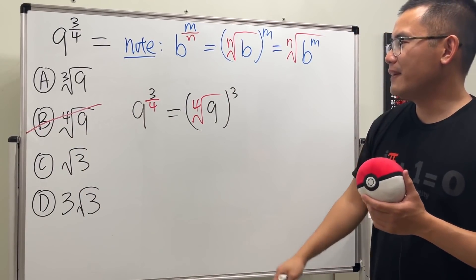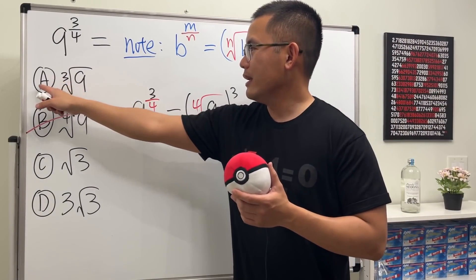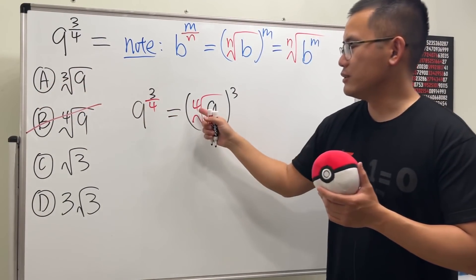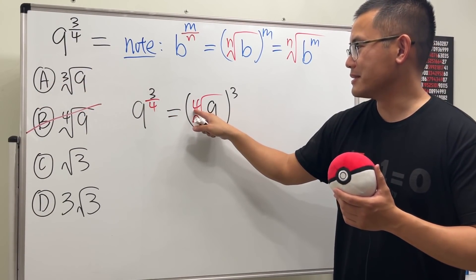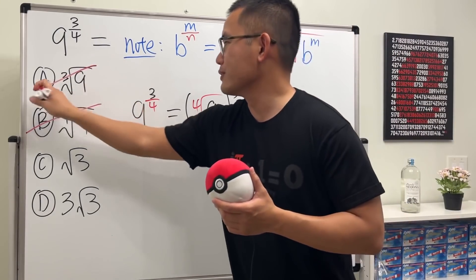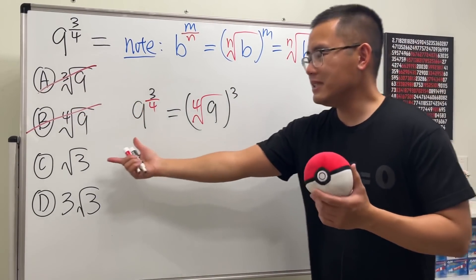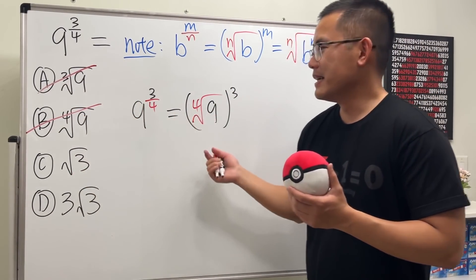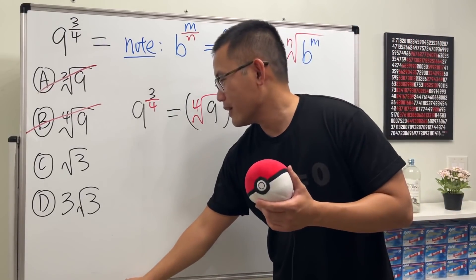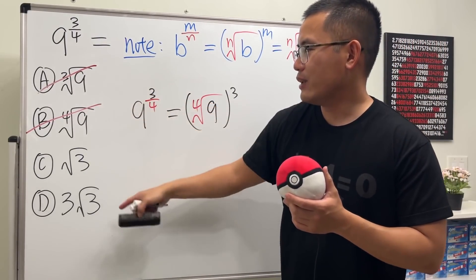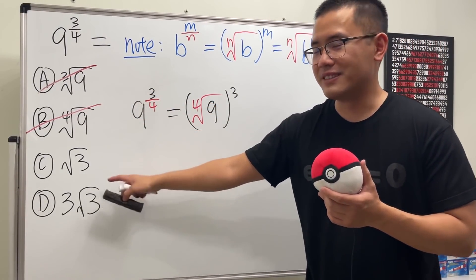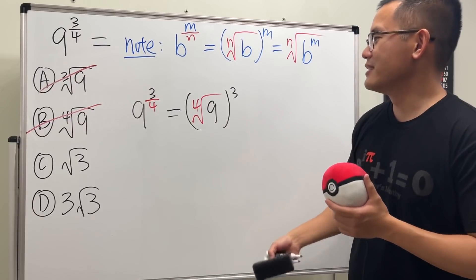So you can just get rid of B right away. And in fact, you can also get rid of the choice A because they just put the three right here instead of the four, which is very wrong. So get rid of that. And of course C is also very wrong because it's just not possible. But once you get rid of this and that, at least you have a 50-50 chance to get the correct answer, which is much better.